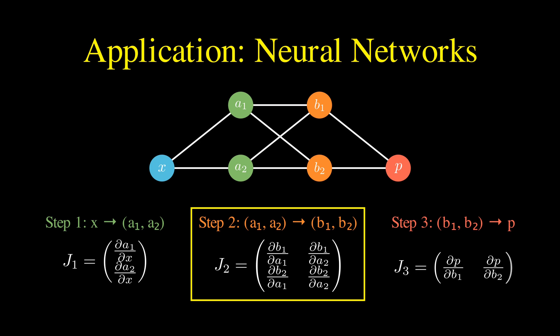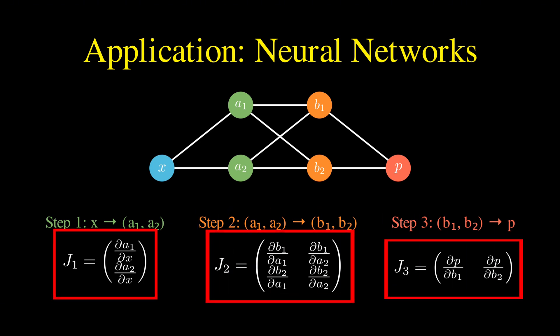At each stage of this neural network, we can compute a Jacobian matrix that describes how the outputs of that stage change with respect to its inputs.